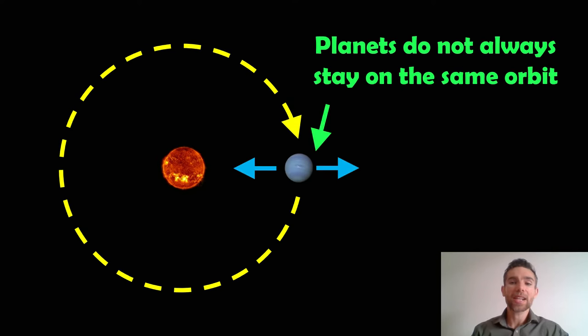If you haven't seen any of the planetary migration videos, just a quick recap. This relates to planet formation because they don't always exist where they form. They move as they form during the formation process, so they don't always stay on the same orbit, especially when they're actually forming. They can move inwards and they can move out.